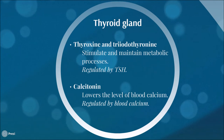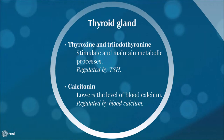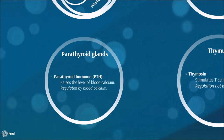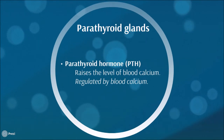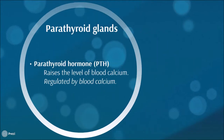The thyroid gland is in charge of the production of thyroxine and triiodothyronine, which are amines that regulate and maintain metabolic processes. They are regulated by TSH. The thyroid also secretes calcitonin, which is a peptide that lowers the level of blood calcium, regulated by calcium in blood. The parathyroid glands produce parathyroid hormone (PTH), which is a peptide that raises the level of blood calcium, also regulated by calcium in blood.